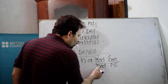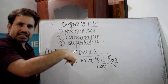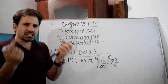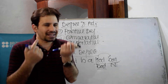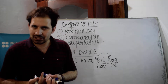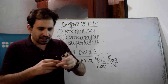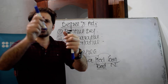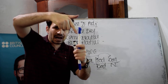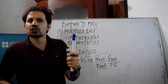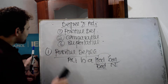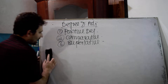Remember, whenever an adjective is in its basic form, we call it the positive degree of an adjective. For example, 'this is a new marker' — we use an adjective for the noun, and we call it the positive degree of an adjective.